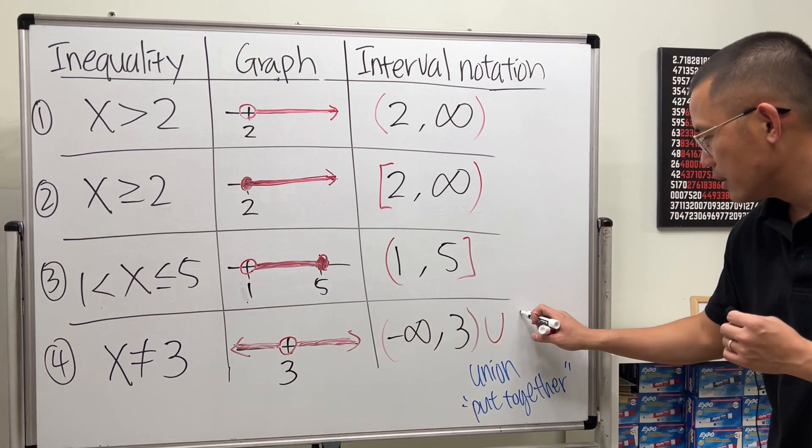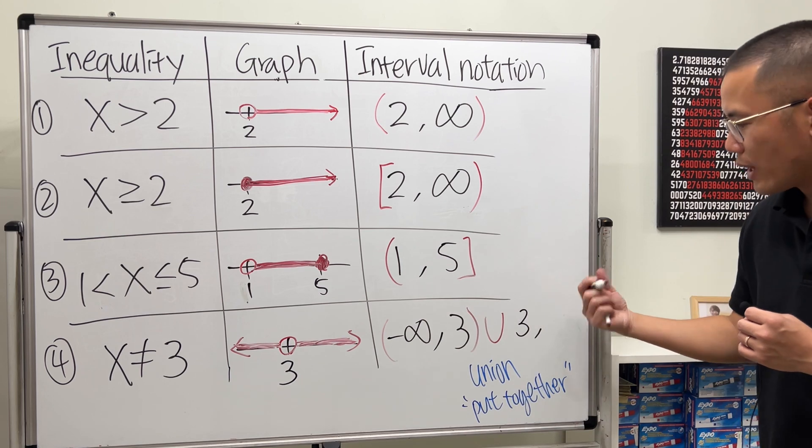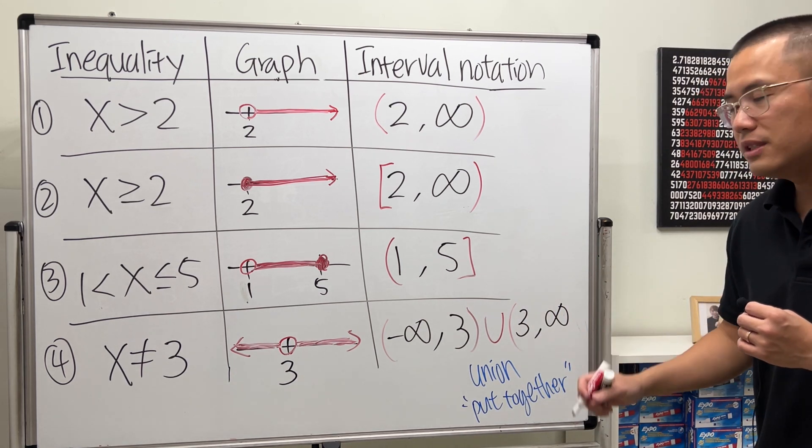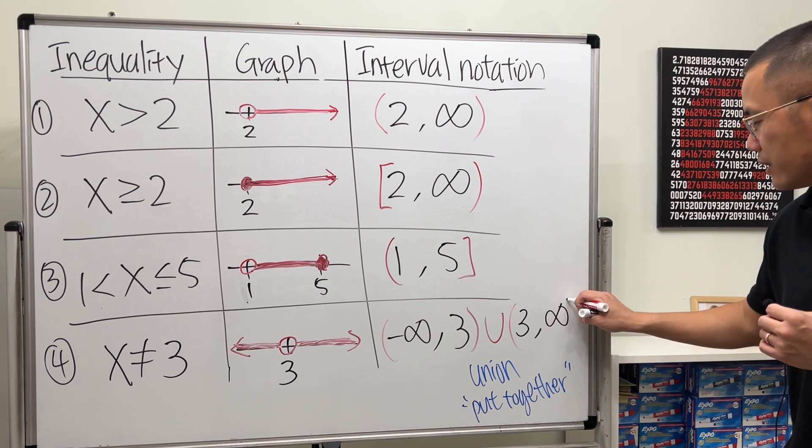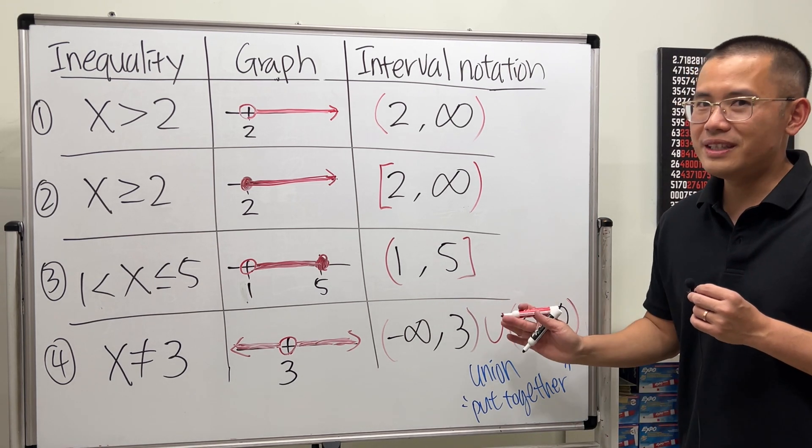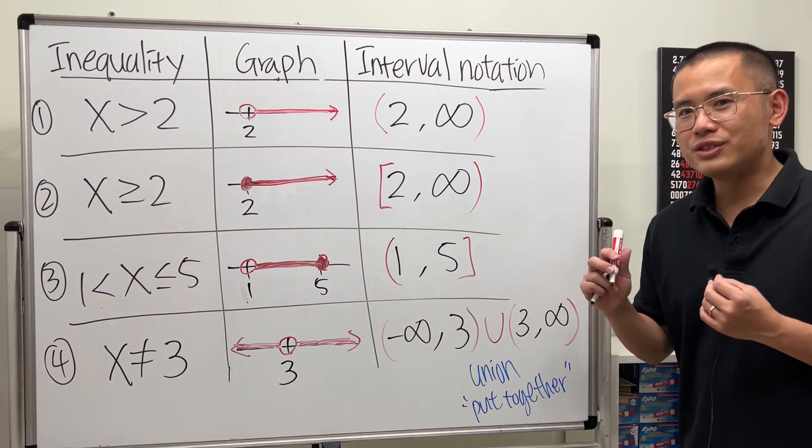So here, we have 3, and then we go all the way to the right. So that would be infinity. 3 is not included, so parentheses. Infinity is not included, right? Parentheses. So hopefully this right here helps. And go ahead and check out my other videos.